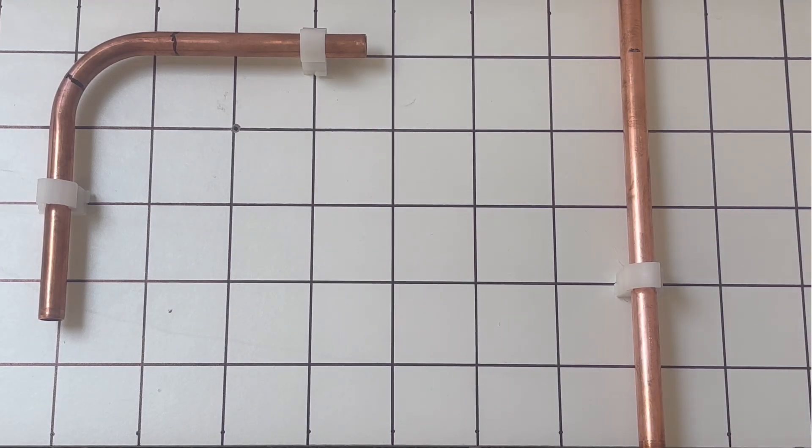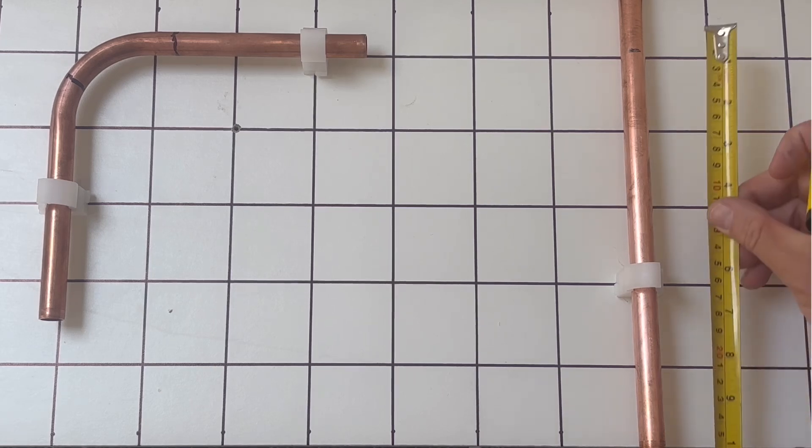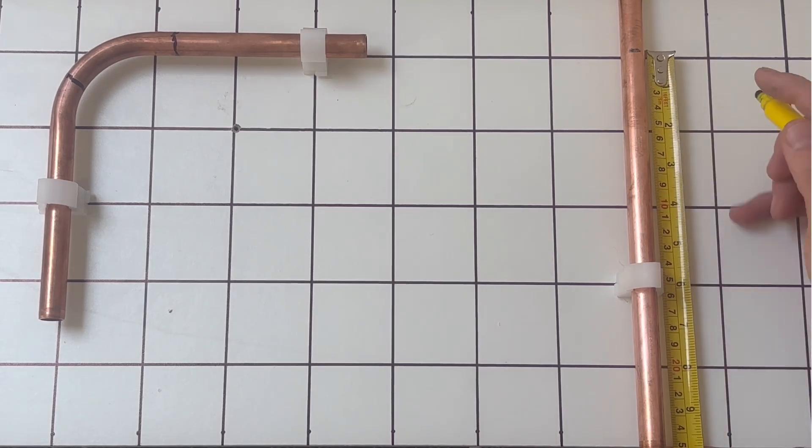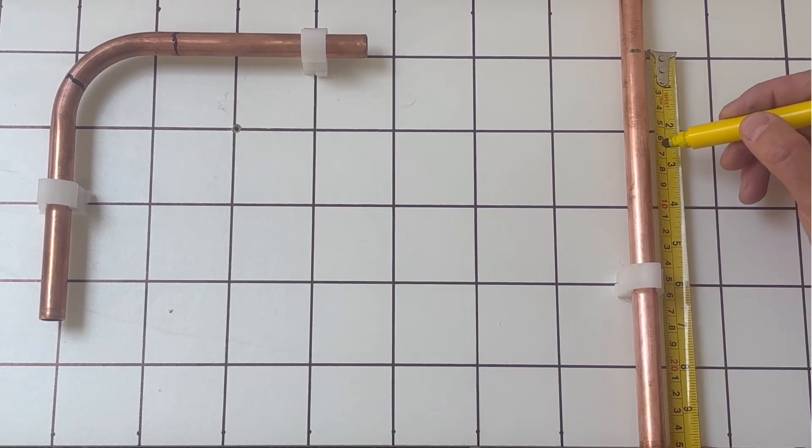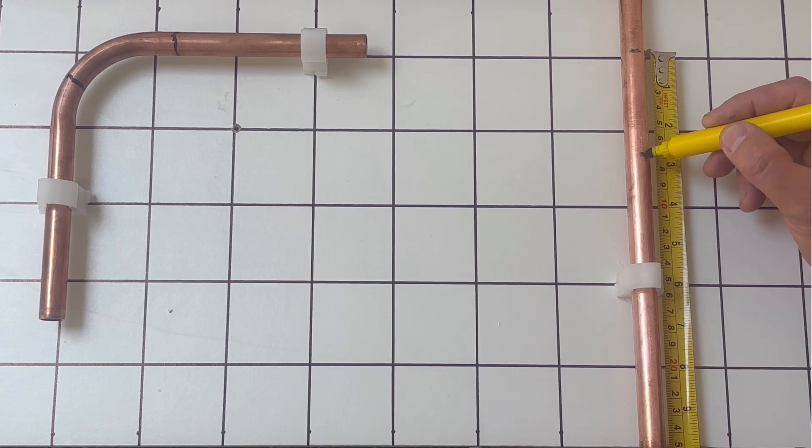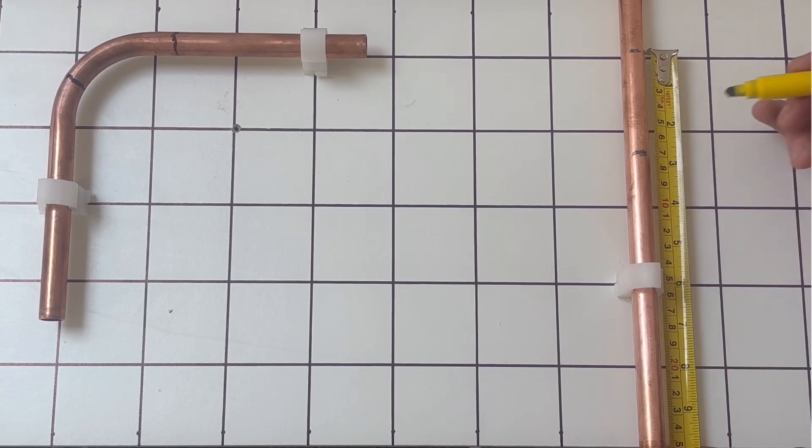And then what we do is we measure 70mm back from that mark. So we'll get the tape measure and then we put the tape measure there and we measure 70mm back from that mark there, or seven centimeters if you're working centimeters.